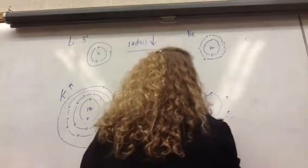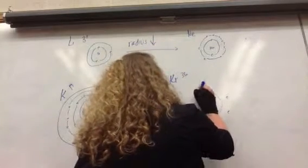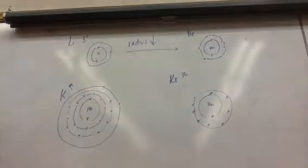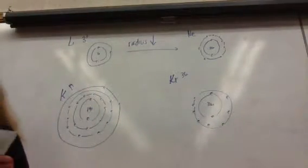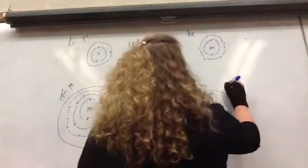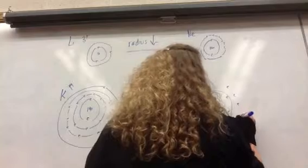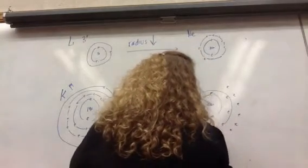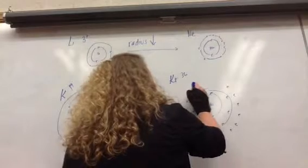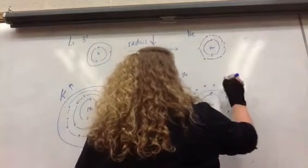One, two, three, four, five, six, seven, eight. How many in the next level? Eight. Eighteen. Because we've filled the Ds now. One, two, three, four, five, six, seven, eight, nine, ten, eleven, twelve, thirteen, fourteen, fifteen, sixteen, seventeen, eighteen.